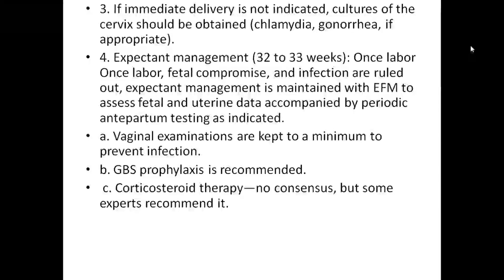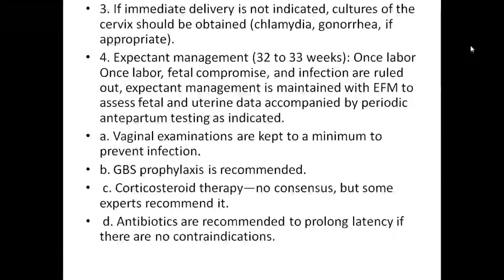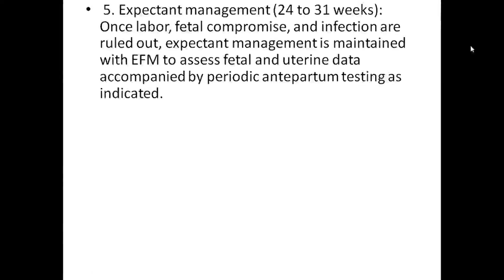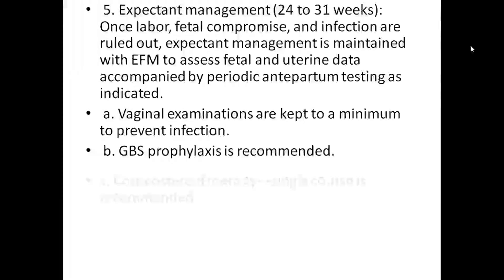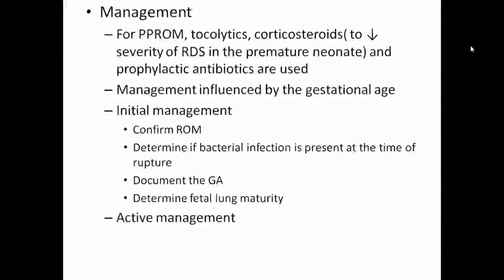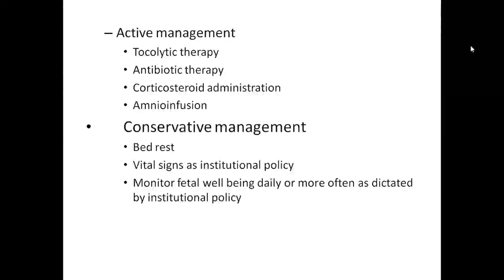Expectant management between 24 to 31 weeks: once labor, fetal compromise, and infections are ruled out, GBS prophylaxis can be done. Management for preterm premature rupture of membranes includes tocolytics, corticosteroids to decrease the severity of RDS in the premature neonate, and prophylactic antibiotics. Initial management: confirm ROM, determine if bacterial infections are present, document gestational age and fetal lung maturity. Active management includes tocolytic therapy, antibiotic therapy, corticosteroids administration, and amnioinfusion.